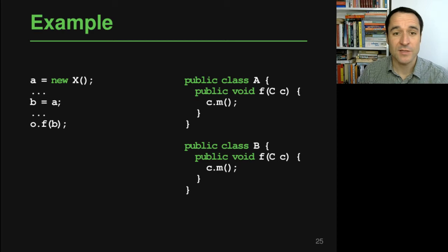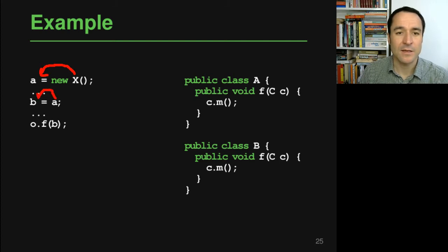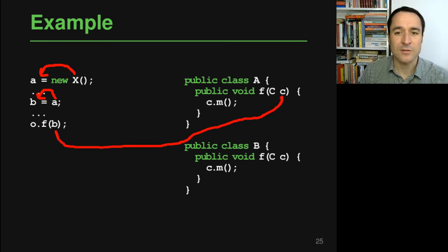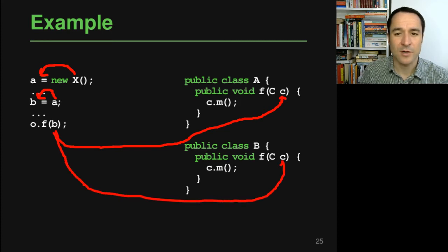Looking at the assignments, which is what this algorithm is basically about, we see that this newly created object is assigned to a, then we see that a is assigned to b, and because of this call we also see that b is assigned to the parameter c in one implementation, and may also be assigned to the parameter c in the other implementation of method f.